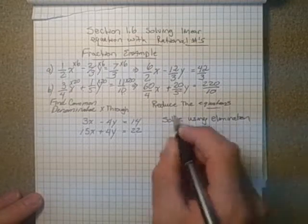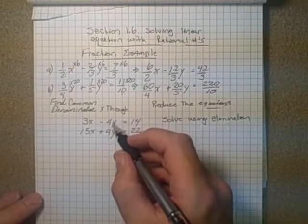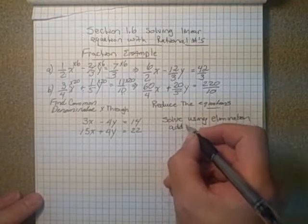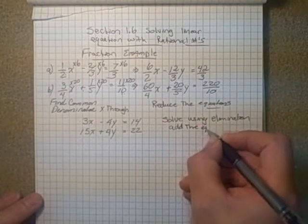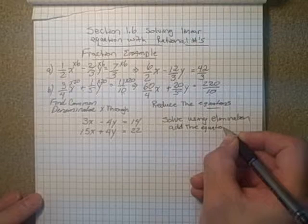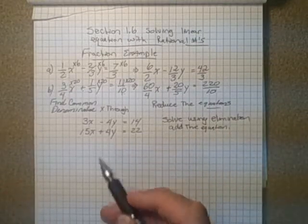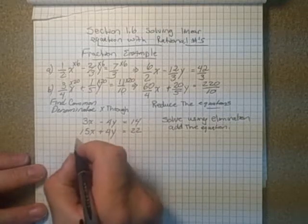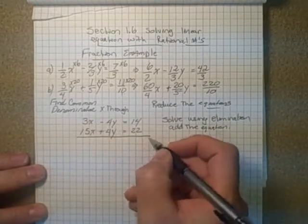By all we have to do because it's already set up for us nicely, there's a negative 4y and a positive 4y, just add the equations. It won't always be set up like that for you, sometimes you'll have to do some manipulation before. But this worked out really well for us, so we just add the equations.